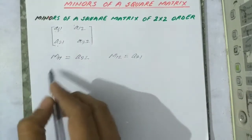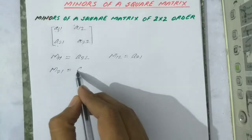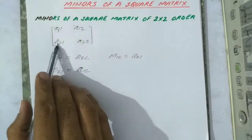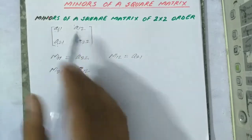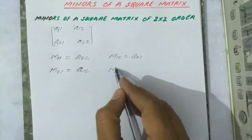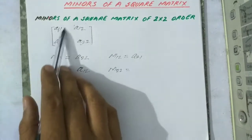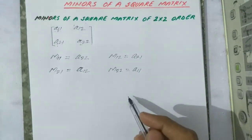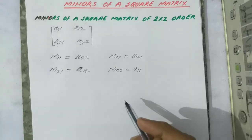In the same way, the minor of a21 denoted by m21 is equal to a12, because if we erase this row and this column, only a12 is left. The minor of a22, denoted by m22 — if we erase this column and this row, what is left is only a11. This is the way to find the minors of a square matrix of 2 by 2 order.